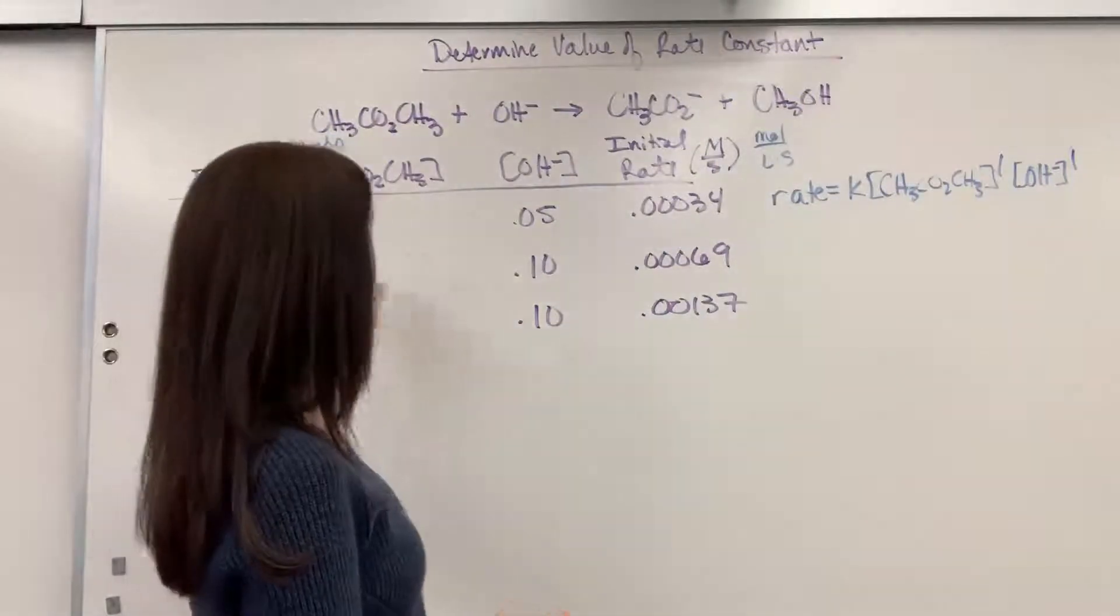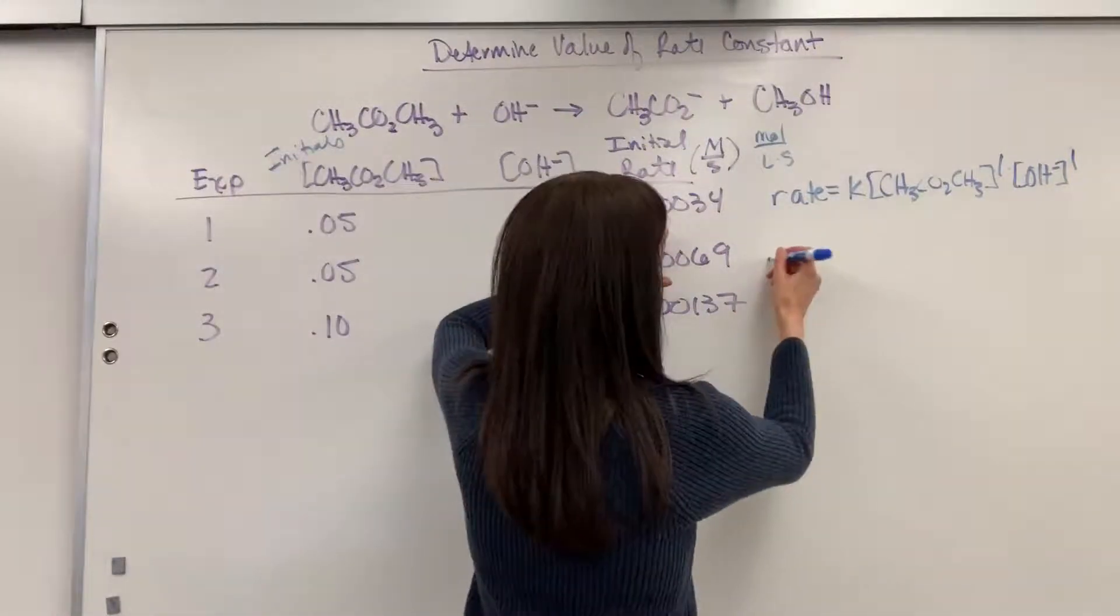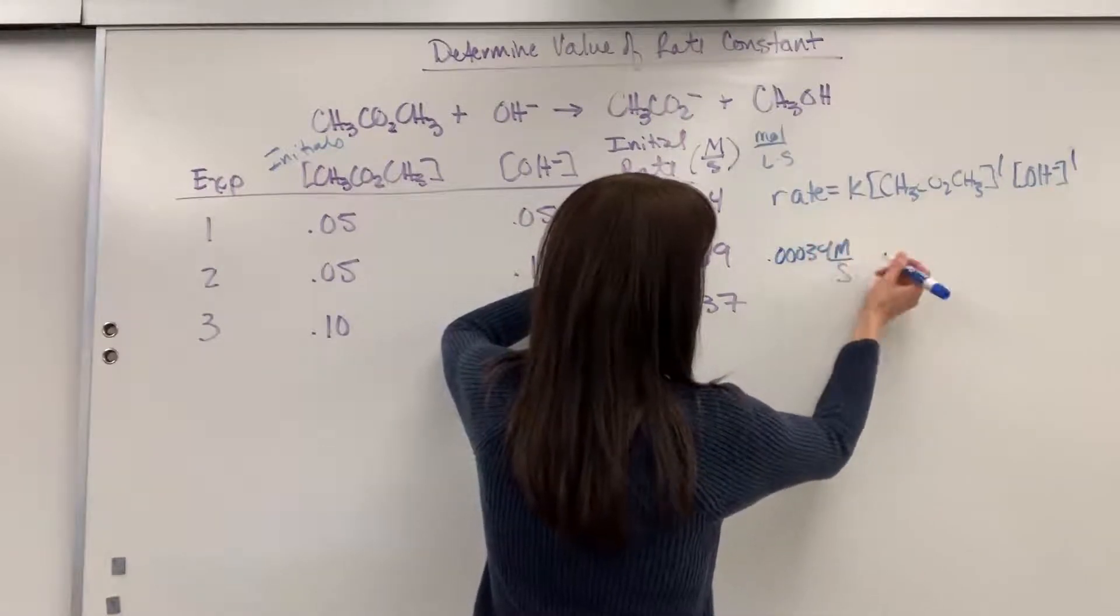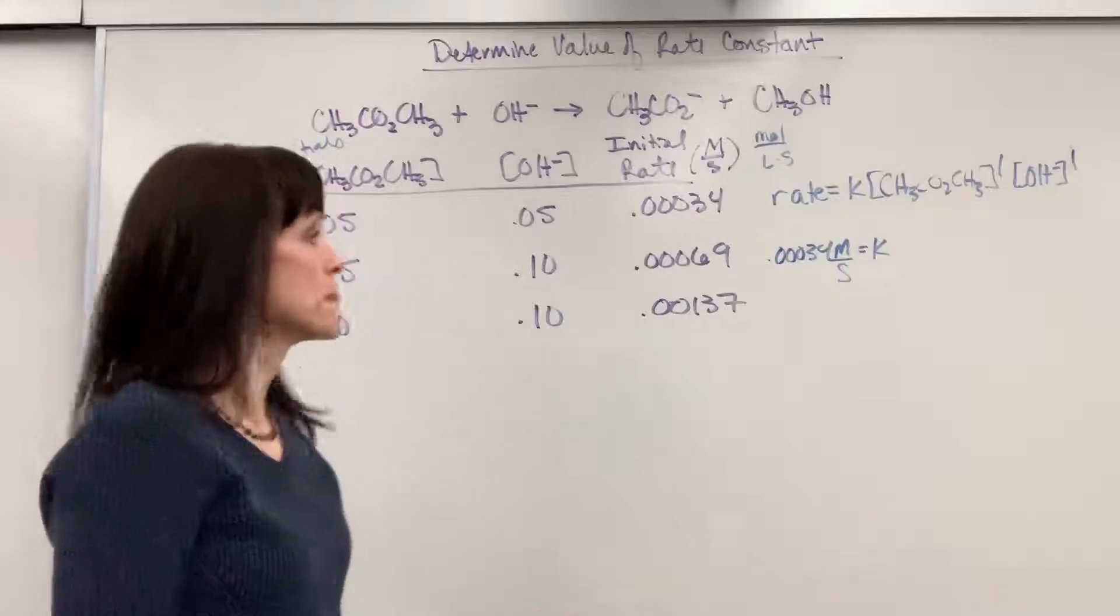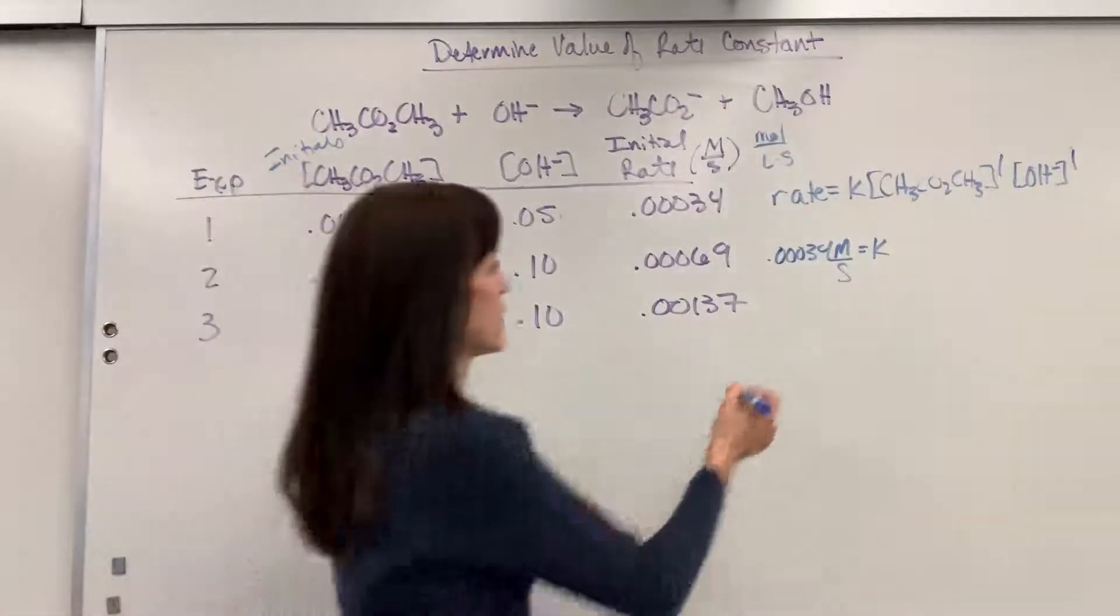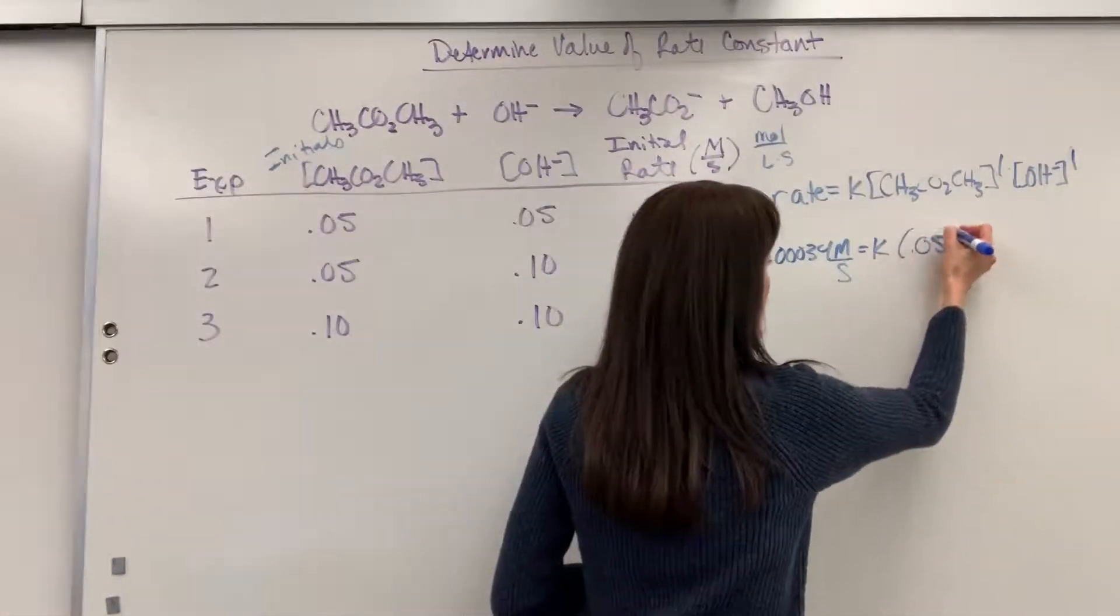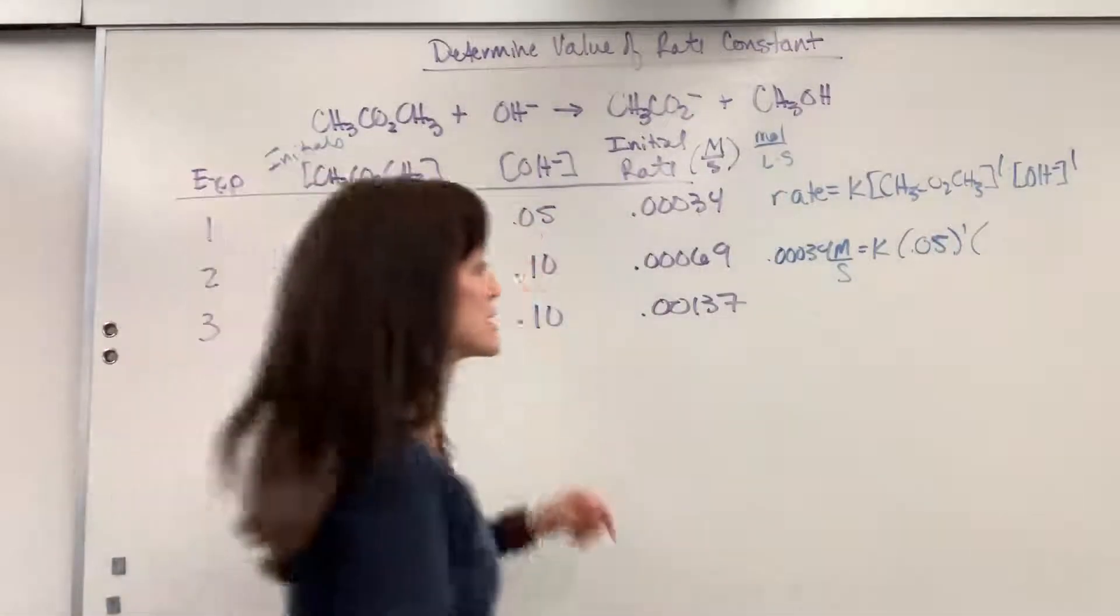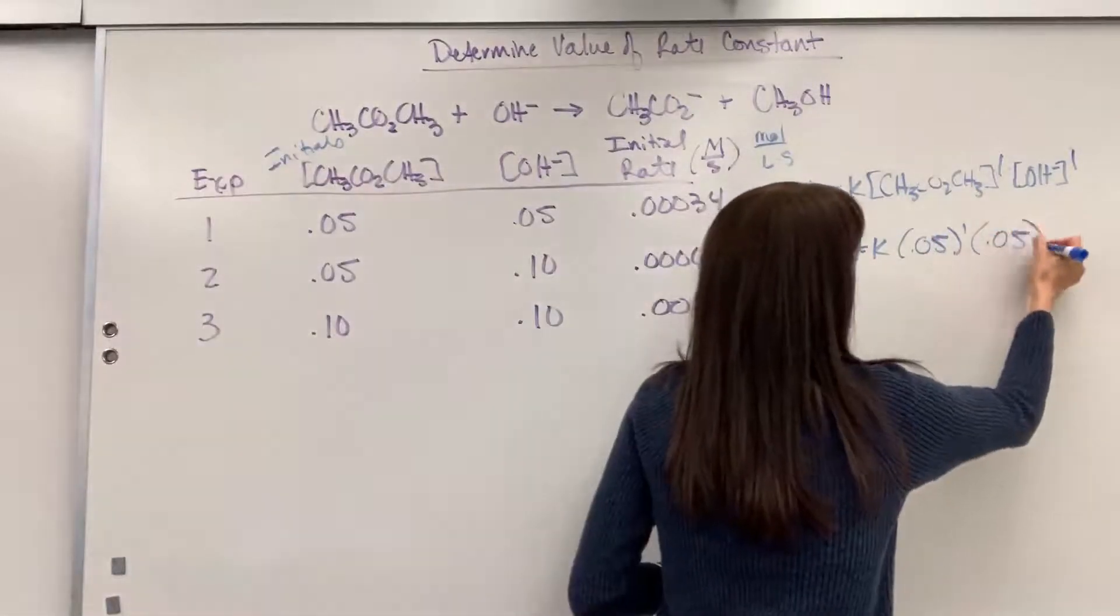We are going to have our rate is 0.00034 molarity per second equals K, there's my unknown, times the concentration of the methyl acetate 0.05 raised to the first order, times concentration of hydroxide 0.05 raised to the first order.